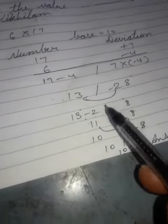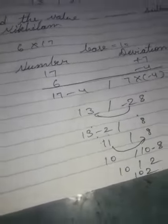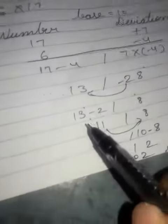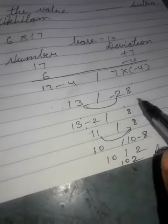From 13, subtract 2 obliquely. 13 minus 2 equals 11, and 8.